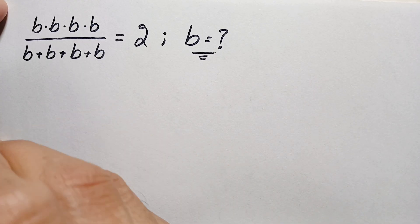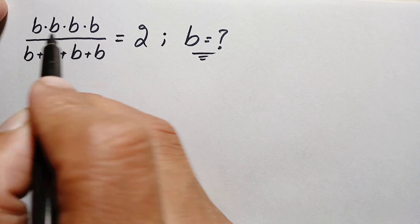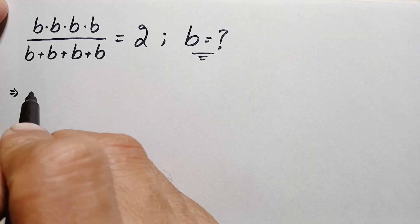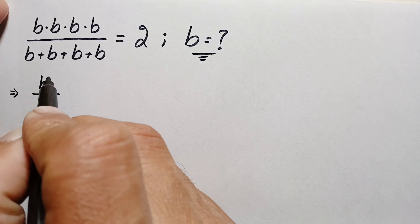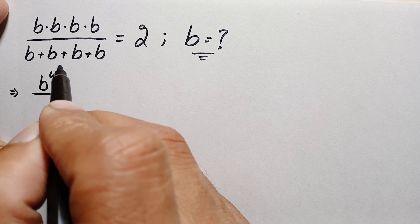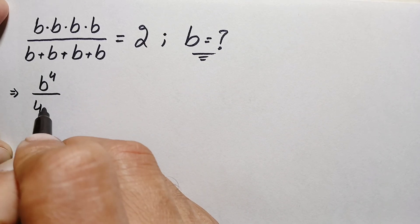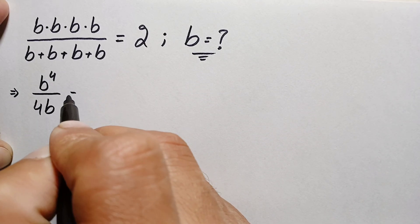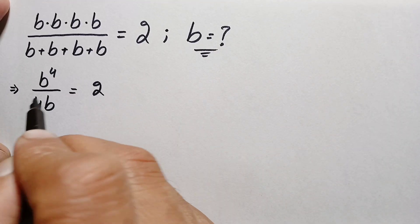Let's start our solution. On the left hand side, b is multiplied four times, so we can write this as b raised to the power four. On the right side, b is added four times, so it becomes four times b, equal to 2.